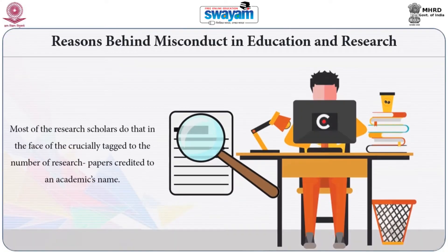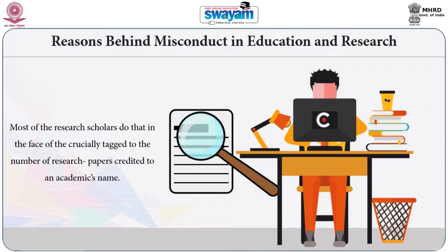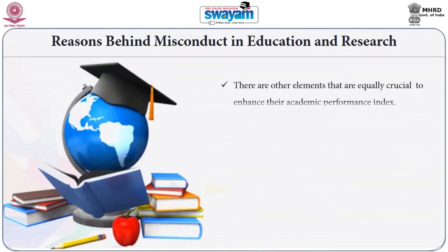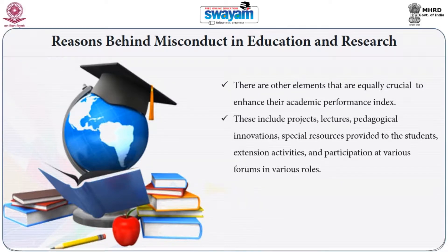Most of the research scholars commit misconduct in the face of the pressure crucially linked to the number of research papers credited to an academic's name. There are other elements that are equally crucial to enhance the academic performance index. These include projects, lectures, pedagogical innovations, special resources provided to the students, extension activities and participation at various forums in various roles.